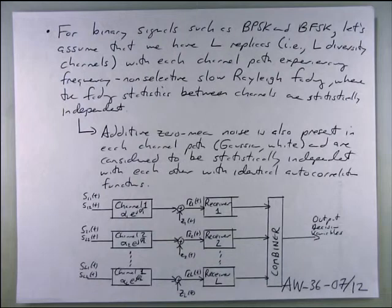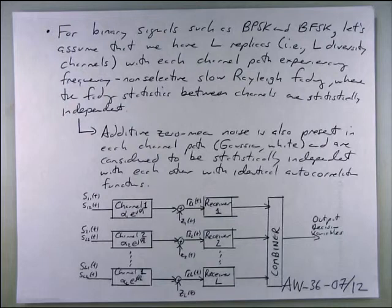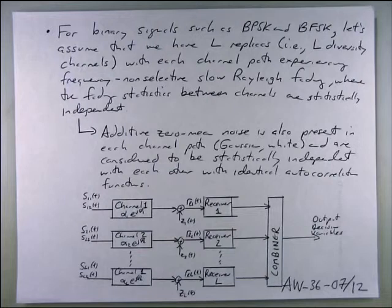Rule of thumb for antenna diversity: if you want totally uncorrelated paths for MIMO, antennas should be about 10 lambda apart. If you want highly correlated paths for beamforming, antennas should be at most lambda apart — preferably half a lambda. These are very different design objectives. Make sure you can find a reference when using 'rule of thumb' in a thesis defense.